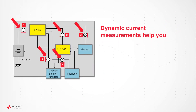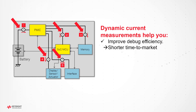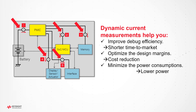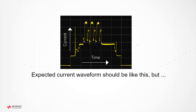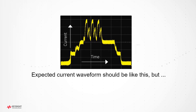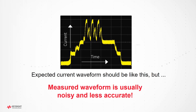Dynamic current measurements for PDN help you improve debug efficiency to realize shorter time to market, optimize design margins to make more cost reduction, and minimize current consumptions to achieve lower power consumption. However, it is not easy to acquire clean and accurate current waveforms required for quantitative analyses. You may not be able to capture accurate waveforms due to large noise or limited bandwidth.